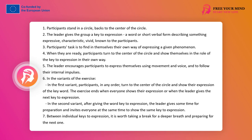The first variant of the exercise: participants, in any order, when ready, turn to the center of the circle and show their expression of the key word. We do not limit the time unless someone would take up space much longer than others. The pace emerges by itself through intuitive entry into the circle. This stage can end when everyone shows their expression, or when the facilitator considers that remaining participants will not do it and gives the next key. Then everyone turns back and the exercise starts anew, lasting as long as participants do not show signs of fatigue — then it can be finished, moved to discussion, or to the second variant performed shorter than the first.